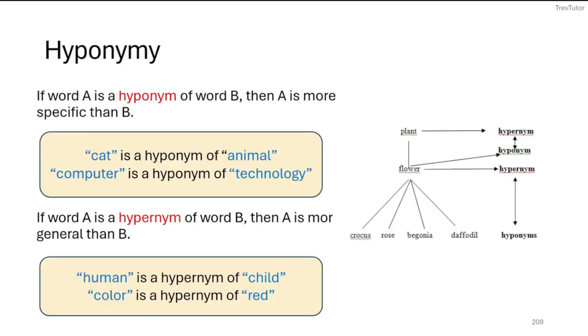What you might not know is hyponymy. So we have hypernyms and hyponyms, and this is about the relationship between generality and specificity. So for example, if we take a look at the chart over here on the right, a plant is a category that holds things like flowers, as well as other things like a bush, for example. And then flowers are things that is a more general category of specific items like crocus, rose, begonia, daffodil, and so on. So the relationship we're talking about is the relationship between the specific one and the general one. So we say the specific one is a hyponym of the general one. For example, cat is a hyponym of animal because cat is a type of animal. Computer is a hyponym of technology because a computer is a type of technology. So when you think of hyponyms, you can just think of a similar rephrase, which is just like 'a type of.'